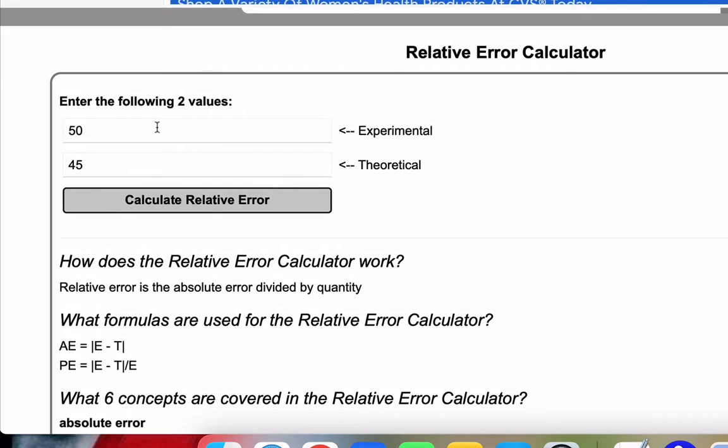So when we're ready, we're going to pick our two numbers to run these calculations. For this video, I'm going to do 50 for experimental and 45 for theoretical. However, I'm going to put a link to this calculator in the comments so that you can run different numbers and see the various calculations.